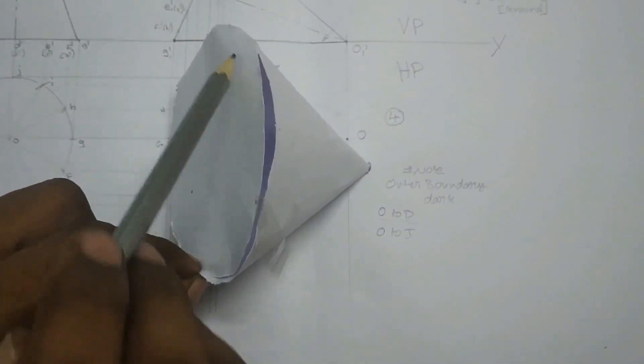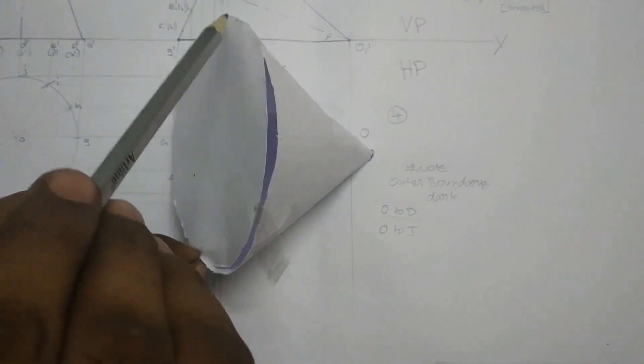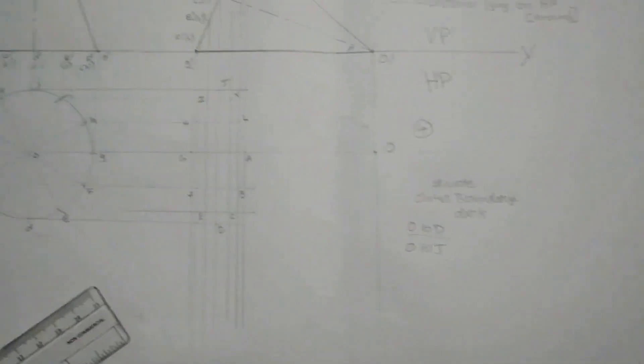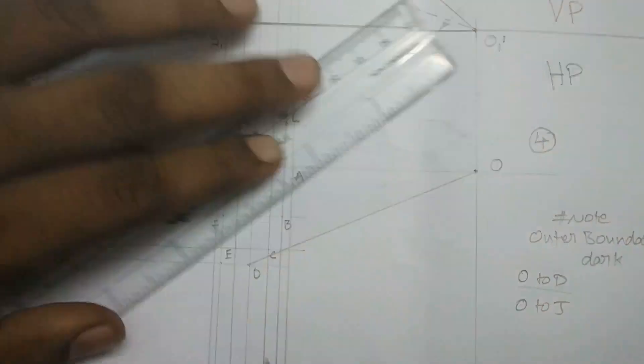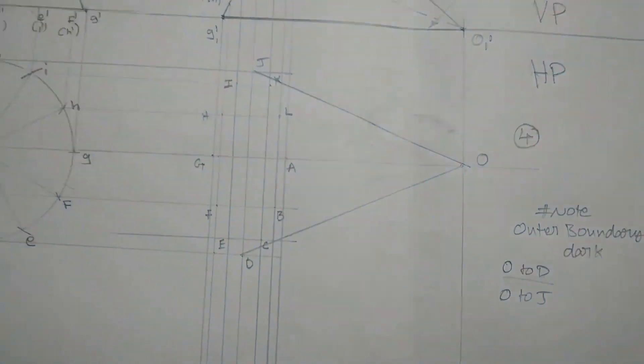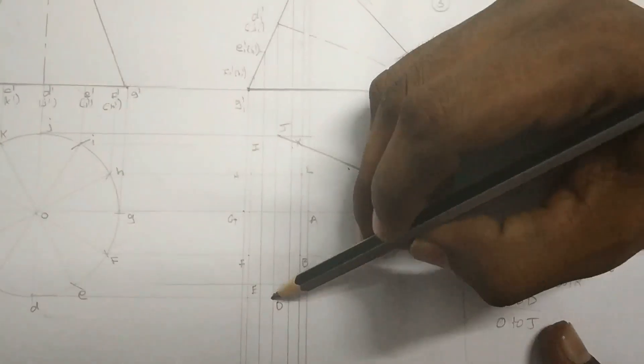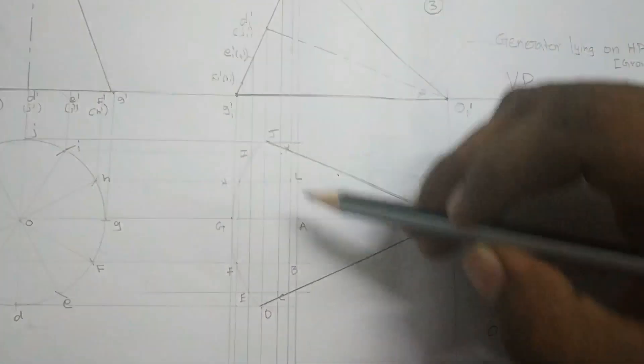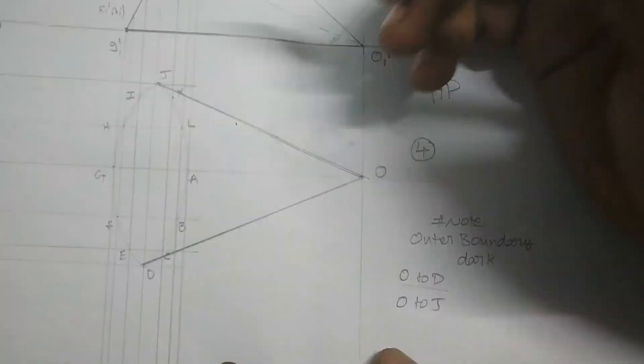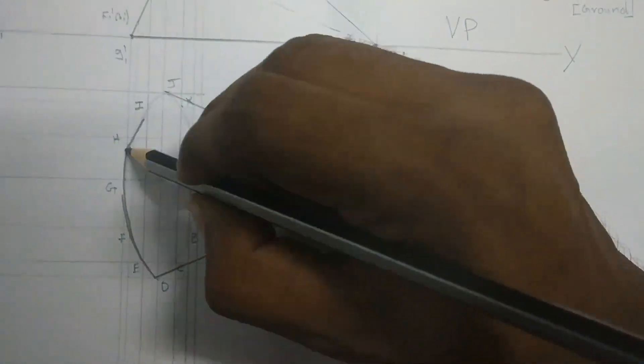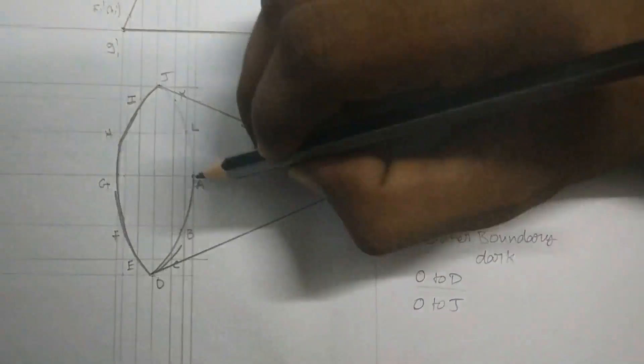Always the outer boundary will be a dark one. Here the outer boundary is O to A, O to G, and so the base of the circle will be a visible one at the top view. Use 2H pencil to draw the profile of the base first and then darken the profile by using the HB pencil.